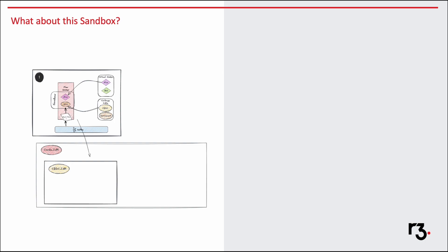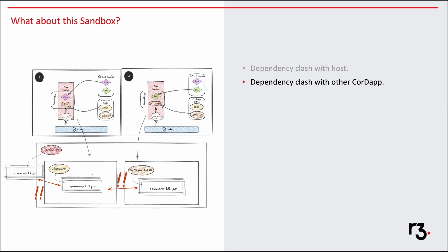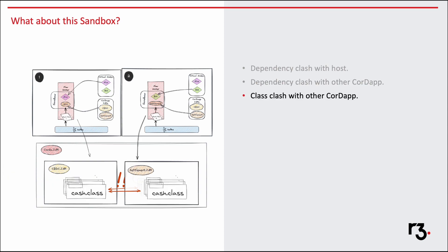In Next-gen Coda, the Coda platform is a jar and the Coda app is also a jar, similar to Coda 4. It has to be hosted in a host process, for example the flow worker. Your Coda app can use a third-party library, say commons.jar — it might happen that commons.jar is also used by Coda.jar, creating a dependency clash with the host. Sandboxing saves us from this situation. Previously there could be a clash if some other Coda app used the same jar, but sandboxing will prevent this as well. Apart from third-party libraries, a class in one Coda app can conflict with a class from another Coda app if their package and class names are the same — but again, sandboxing solves this problem.